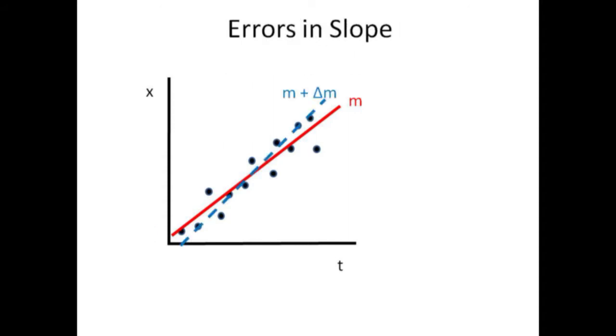The error in the slope is also determined with the linear fit. The slope could potentially be as large as m plus the error. The slope could be as small as m minus delta m, the error. The slope is uncertain by an amount delta m.